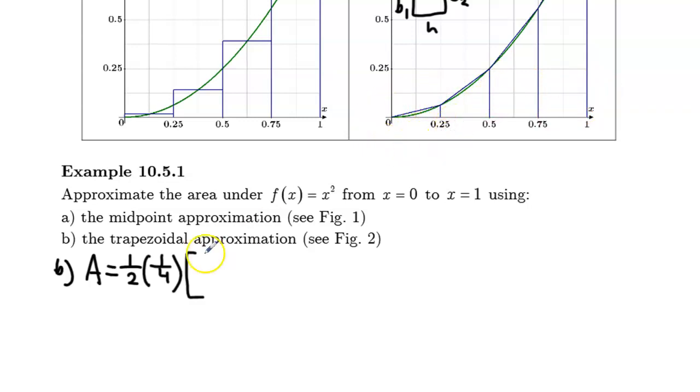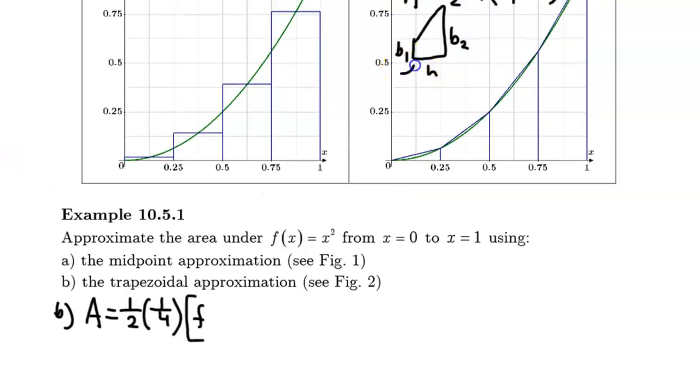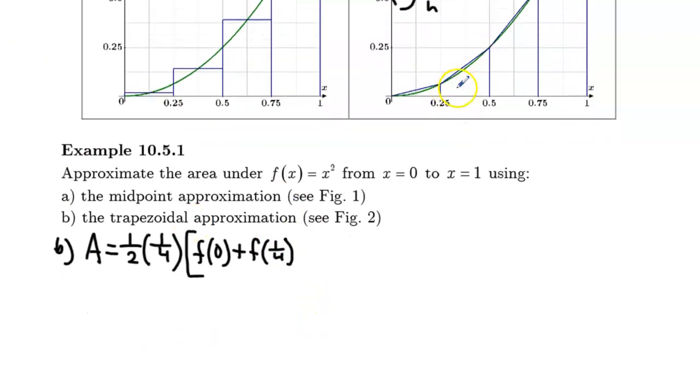So let's look at the first one. The first one we have left base length or base one. The base one length is evaluated at f at zero, which we know is zero. We can even see that, but I'm just going to write that in there. And base two is going to be the value of the function evaluated at f at one quarter. I think I will go with fractions. And then that's the first trapezoid.